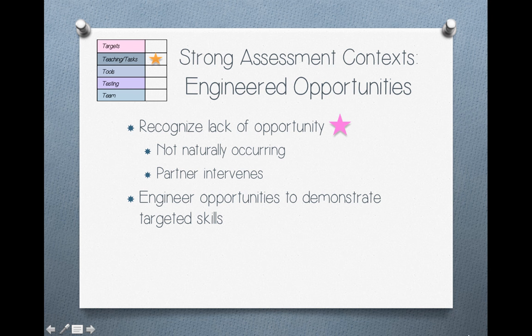Be aware of when there was no real space or time for a behavior to occur, or when the partner intercepted an opportunity and didn't give the child a chance to do it themselves. You may need to set those items up or have the partner back off. When we say the student can't or doesn't do something, the next question should be: where did they have a chance to show me that? More often than you'd think, there was simply no chance.